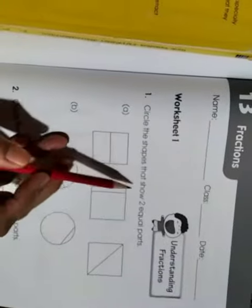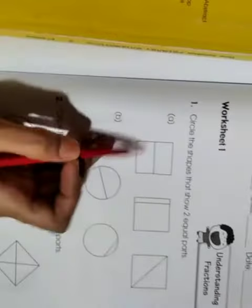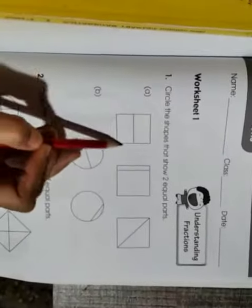Now come to the homework I have given you in today's class. On page 99, there are questions you have to do in your workbook. Circle the shapes that show two equal parts. So you will circle only the shapes which have two equal parts.